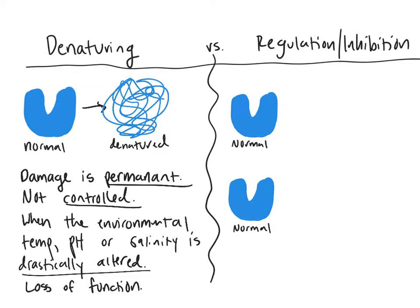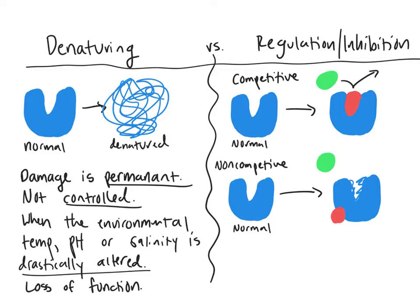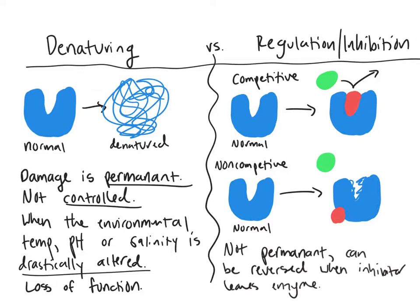So with regulation, we can go from normal enzymes with competitive and non-competitive inhibition. What competitive and non-competitive have in common is that in competitive inhibition the substrate cannot bind to the enzyme because there is a competitive inhibitor blocking its way. In non-competitive inhibition, the substrate tries to bind but can't because the non-competitive inhibitor has caused the active site to alter. You can see this alteration is a lot less drastic than the alteration seen with denatured enzymes.